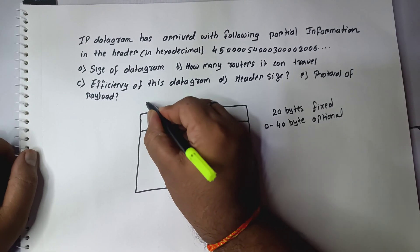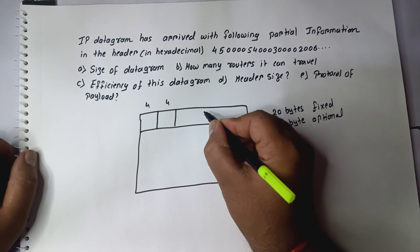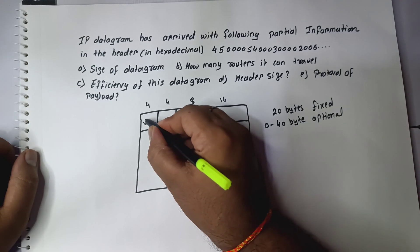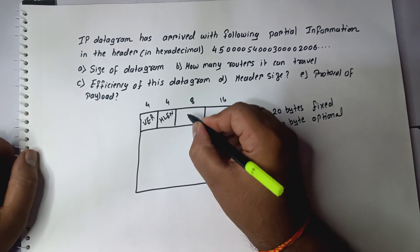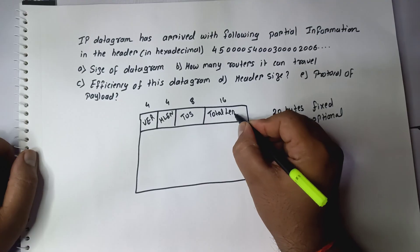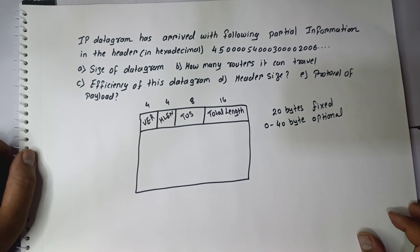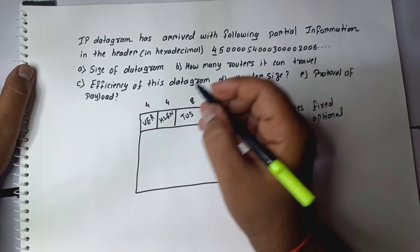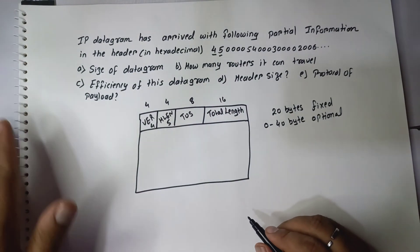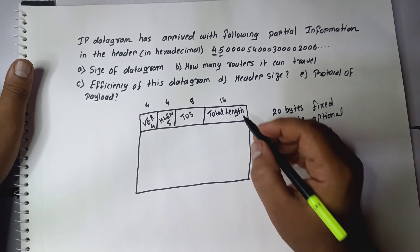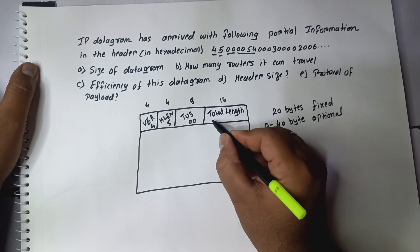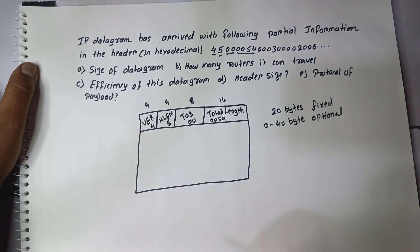Let's draw the IPv4 header. The first field is 4 bits, the second is also 4 bits, the next is 8 bits, and the next is 16 bits. The first field is version, next is header length, then type of service, and then total length. The values are given in hexadecimal form — this represents the version, this represents the header length, the next 8 bits represent the type of service, and the next 16 bits represent the total length.